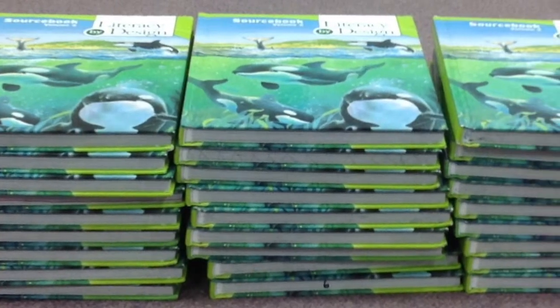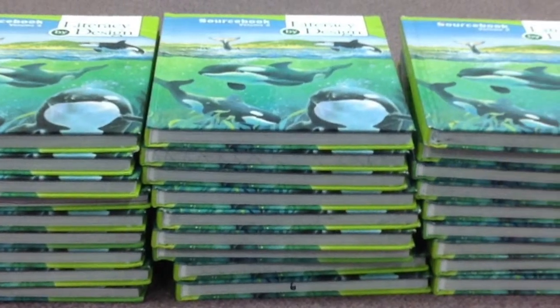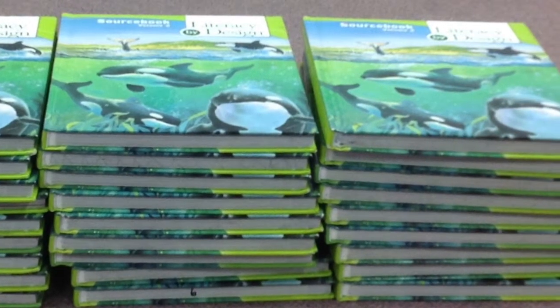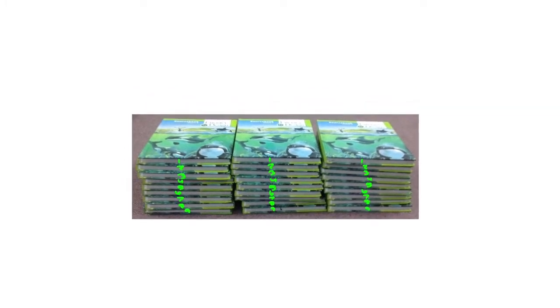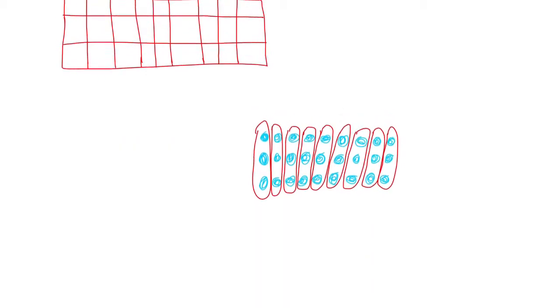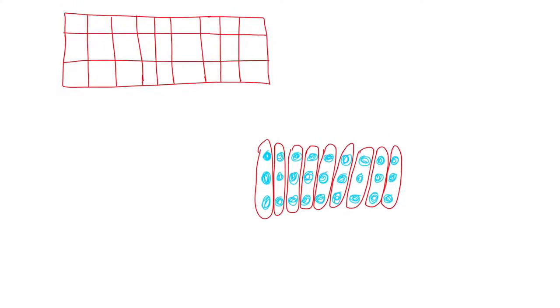This is three groups of nine. Can you see three groups of nine? Can you draw a representation? This is a representation of three groups of nine.